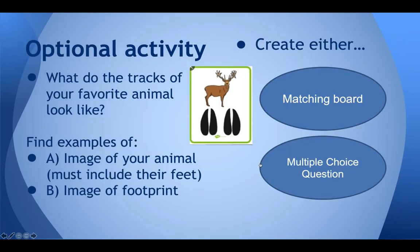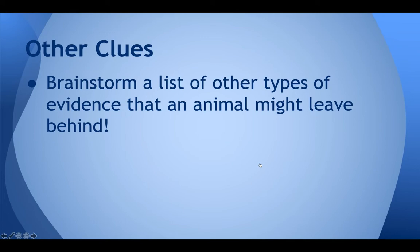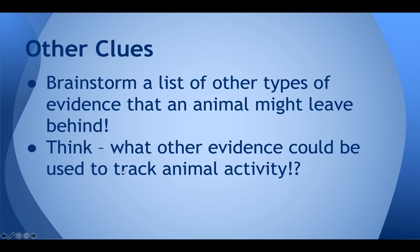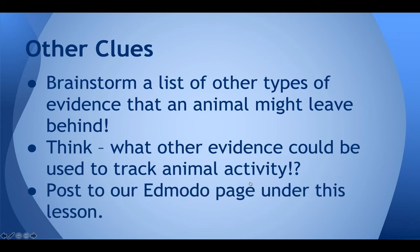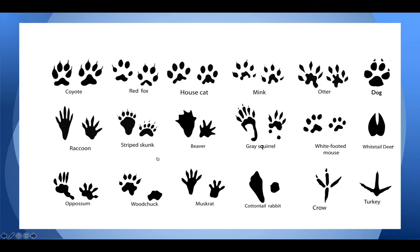The only other thing we're going to talk about today: I would like you to brainstorm a list of other types of evidence that an animal might leave behind at a scene. We talked about footprints, but what other evidence could an animal leave behind as evidence of activity? Post this on our Edmodo page under this lesson — this is like an attendance check, so just make a prediction. Everyone should be able to think of at least one thing.